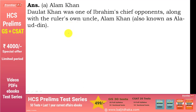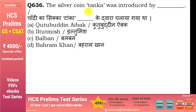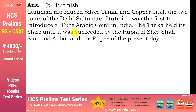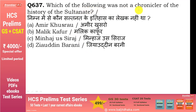The silver coin Tanka was introduced by Iltutmish। चांदी का Tanka और copper का Jital दोनों Iltutmish ने चलाए थे। Iltutmish ने India का पहला pure Arabic coin भी चलाया था। Tanka तब तक चलन में रहा जब तक Sher Shah Suri का Rupaya नहीं आ गया। बाद में Akbar ने भी Rupaya चलाया और present day रुपया currency चल रही है।